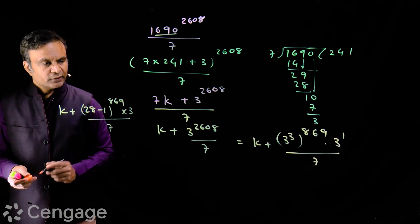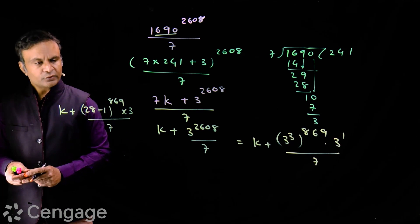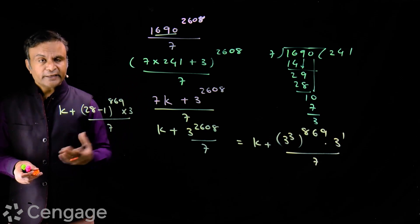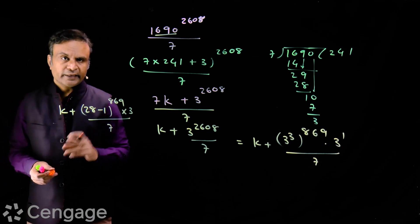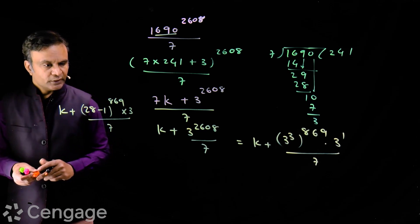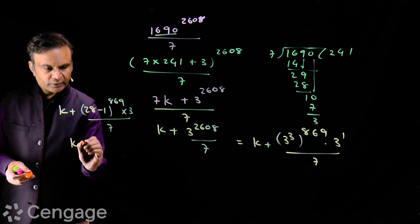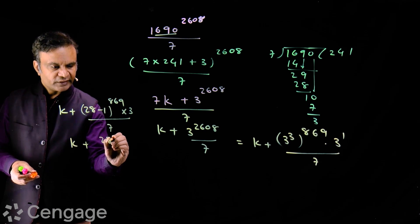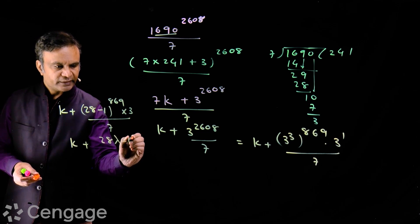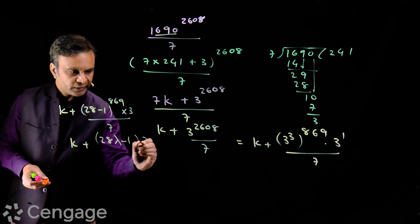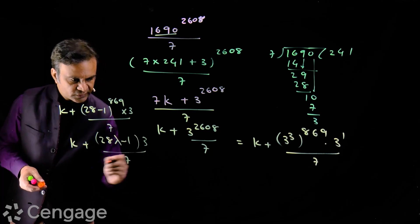Now here last term is minus 1 because here we have odd index. 869 is odd natural number. So the last term will be minus 1. Before that, each term will have 28 as factor at least once. So we have here number of type 28 lambda minus 1. So we have this multiplied by 3 over 7.